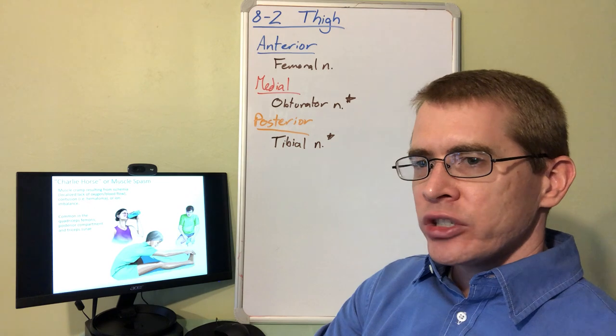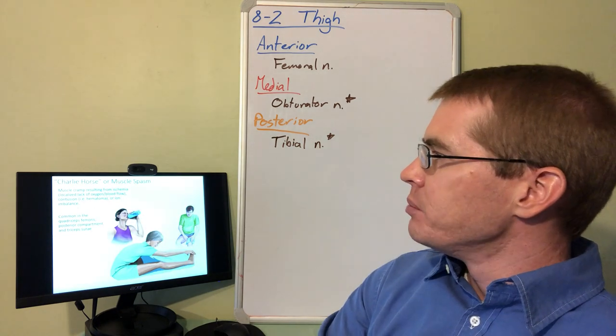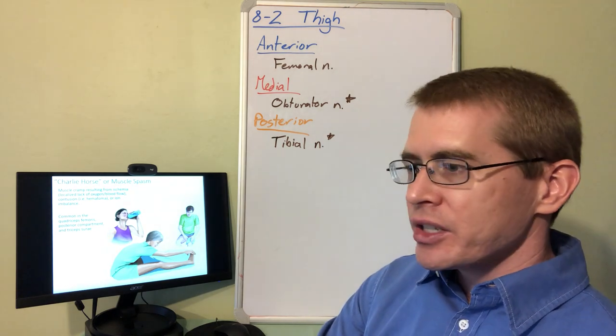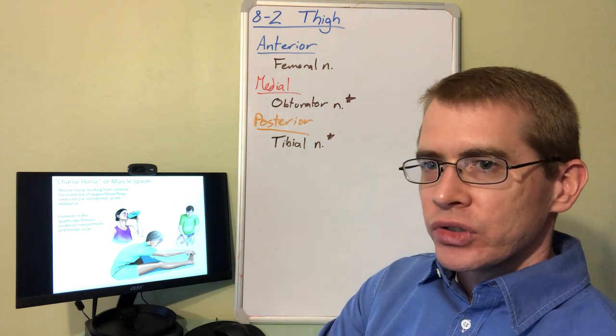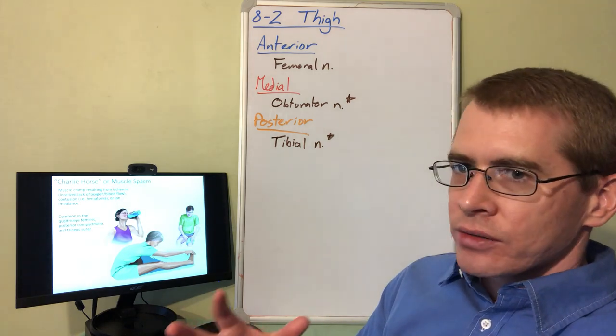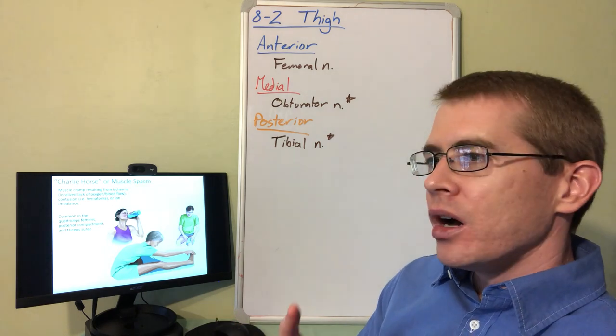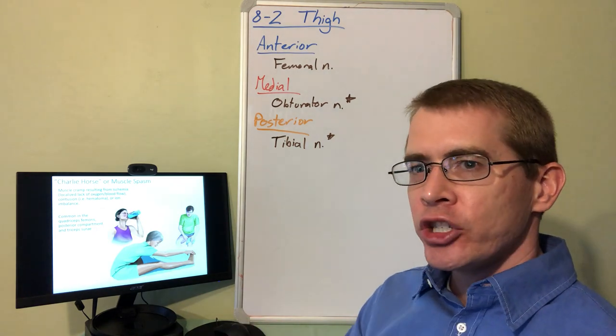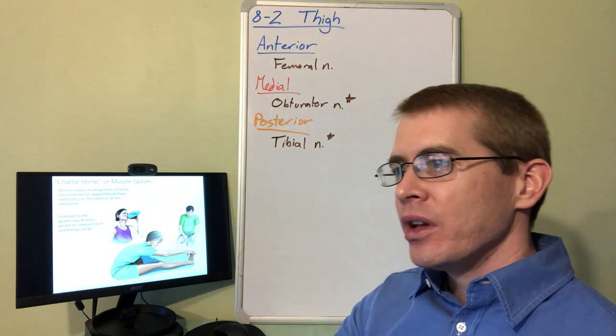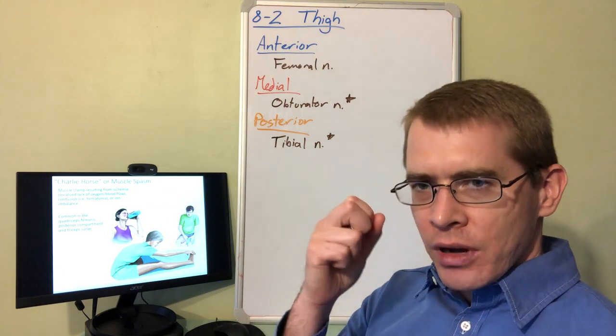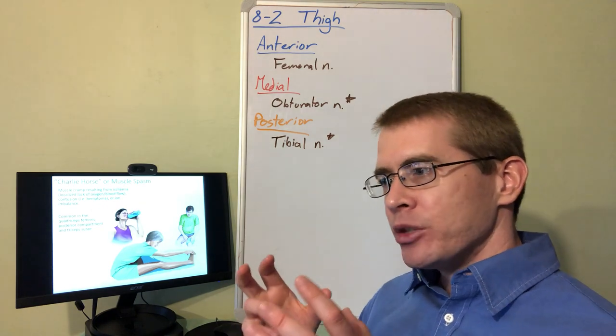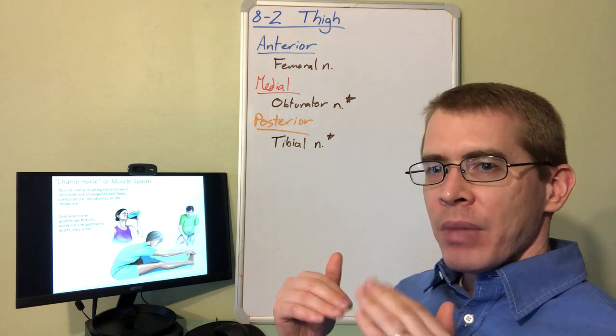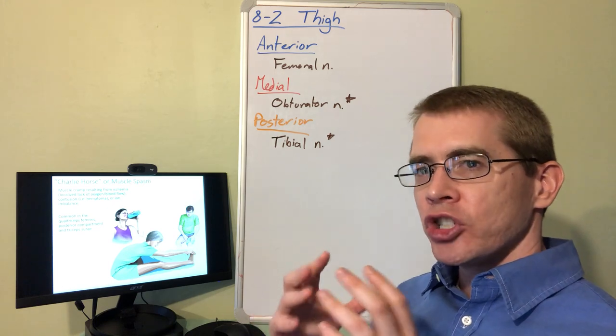I always get questions about certain conditions related to the thigh. One of these is the muscle spasm of the charlie horse, common in the quadriceps femoris, maybe also the posterior compartment of the thigh or triceps surae, which are the calf muscles. The charlie horse is really a result of lack of oxygen, lack of blood flow to a portion of a muscle. Also, if you have a contusion in a muscle that might break or damage the perforating arteries or the vasculature that drain the muscle, that can result in this imbalance in the ions due to poor blood flow that can lead to a charlie horse spasm.